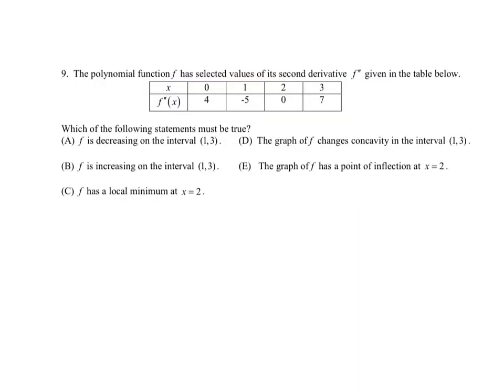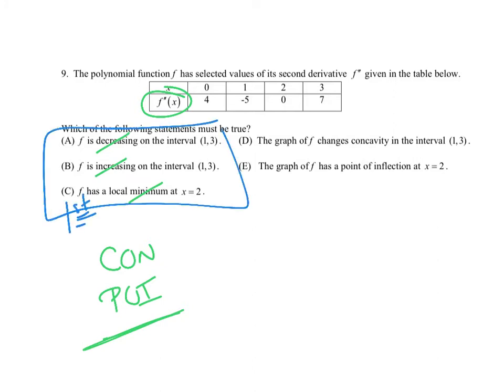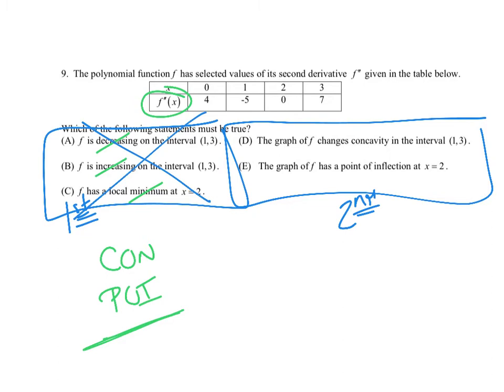Alright, next question. They love these tabular questions, and they're so easy to fall for. So they give me a table of f double prime, and they're saying which of the following statements is true. Now I want you to think first. When you see double prime, which word should trigger in your head? Concavity, points of inflection. These all talk about f double prime. Not mins, not increasing, not decreasing. These are all first derivative type questions. These are all second derivative type questions. So common sense should have crossed those off. I need to focus on the second derivative because that's what I know something about.